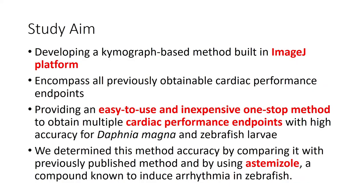The aim of this study is to develop a Chemograph-based method using a built-in ImageJ platform, which is free and widely used for image data processing, and to encompass all previously obtainable cardiac performance endpoints. We also want to provide an easy-to-use and inexpensive one-stop method to obtain multiple cardiac performance endpoints with high accuracy for Daphnia magna and zebrafish larvae. We determine this method's accuracy by comparing it with a previously published method and by using astemizole, a compound known to induce arrhythmia in zebrafish.